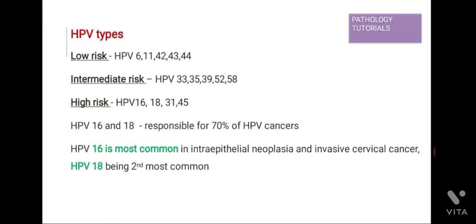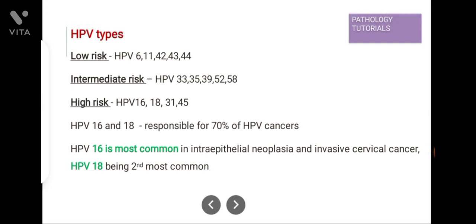Now coming to the HPV types. There are basically three types: low risk, intermediate risk, and high risk. Low risk includes HPV 6, 11, 42, 43, and 44. Intermediate types are 33, 35, 39, 52, and 58. High risk HPV types are HPV 16, 18, 31, and 45. HPV 16 and 18 are responsible for 70% of HPV-related cancers. HPV 16 is most common in intraepithelial neoplasia and invasive cervical cancer, and HPV 18 is second most common.